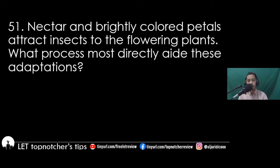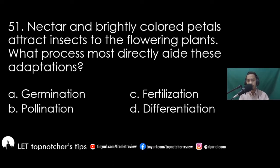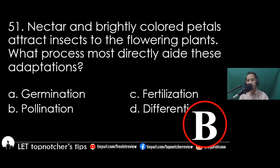Item 51: Nectar and brightly colored petals attract insects to flowering plants. What process most directly aids these adaptations? A) germination, B) pollination, C) fertilization, D) differentiation. The best answer is letter B, pollination.